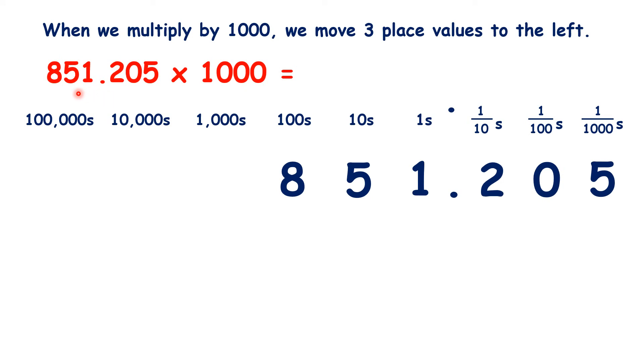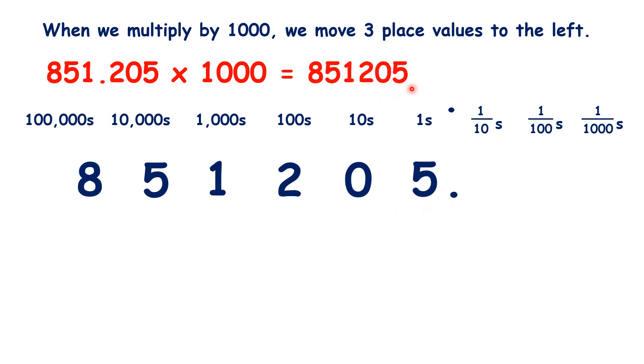And finally, what is 851.205 times a thousand? Three places to the left, and we have 851,205.